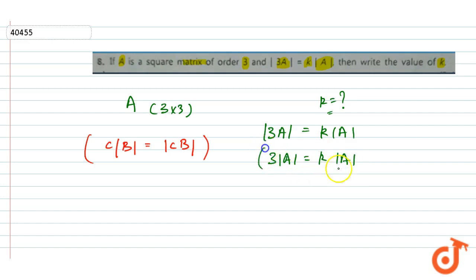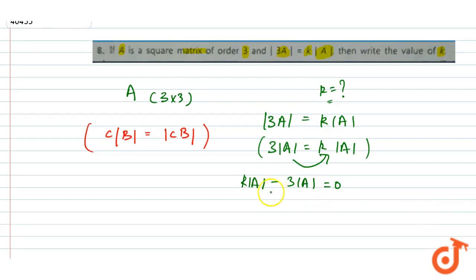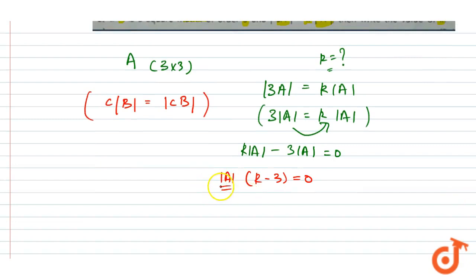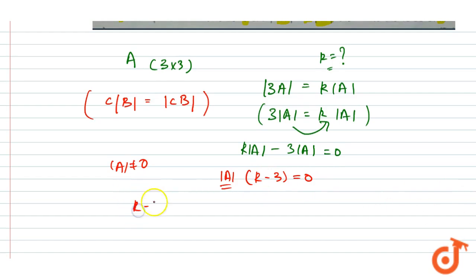अब k·det(A) minus 3·det(A) equals 0। दोनों में से det(A) common निकालें तो k minus 3 equals 0। det(A) cannot be equal to 0, इसलिए यह quantity 0 नहीं हो सकती। तो k minus 3 = 0, यहाँ से value of k आएगी 3।